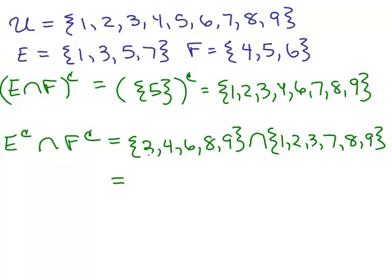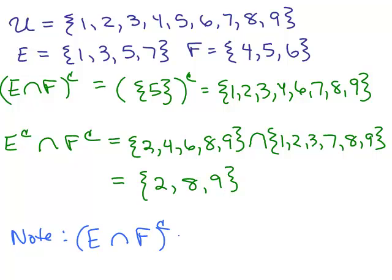And let's see, do they both have a 2? Yes. Do they both have a 4? No. Do they have a 6? No. Do they have an 8? Yes. Do they both have a 9? Yes. So notice E intersection F complement over here, we get these numbers here, everything except 5, but E complement intersection F complement is this. So these are not equal either. So just note E intersection F complement is not the same thing as E complement intersection F complement.